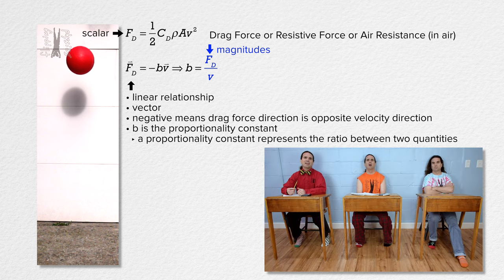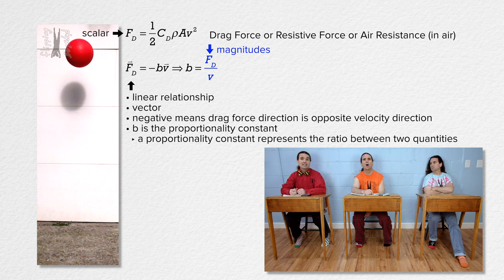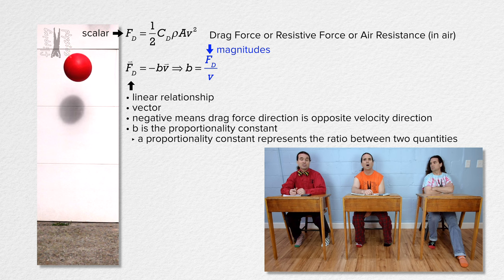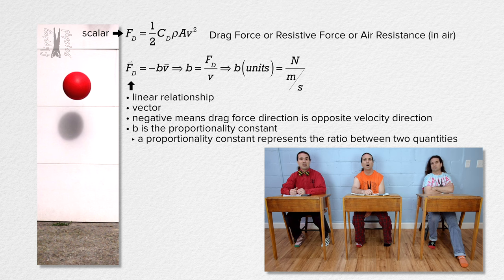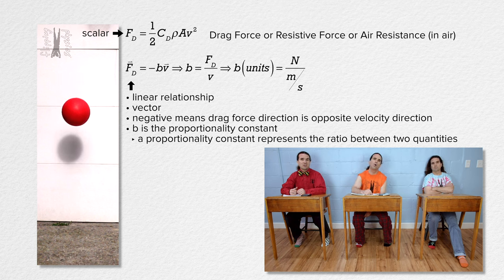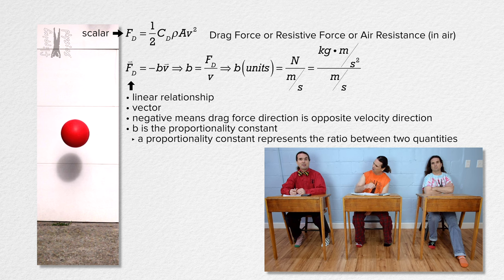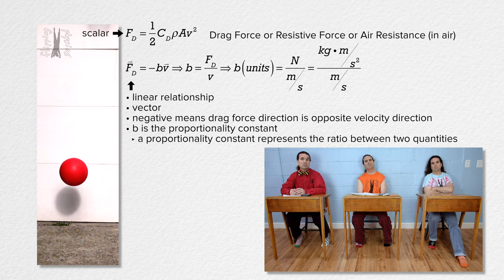The proportionality constant is just a constant value which represents the ratio of two proportional quantities. If we solve the equation for the proportionality constant, you can see it represents the ratio of the drag force to the velocity of the object. The proportionality constant then has units of newtons divided by meters per second. Newtons are kilograms times meters divided by seconds squared, so the units work out to be kilograms per second.